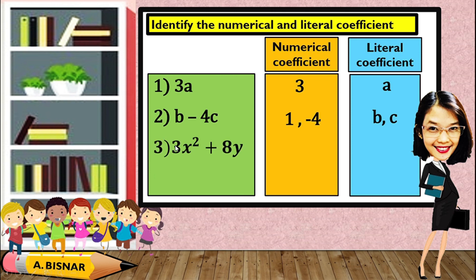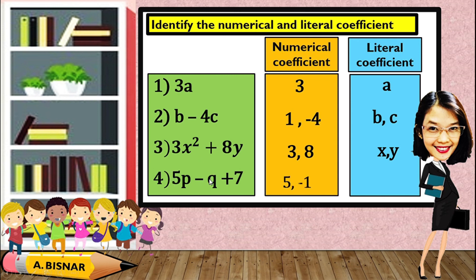For number three, 3x squared plus 8y: the numerical coefficients are 3 and 8, and the literal coefficients will be x and y. For number four, 5p minus q plus 7: we have numerical coefficients 5 and negative 1, and the literal coefficients will be p and q. And that's it. I hope you learned. Thank you.